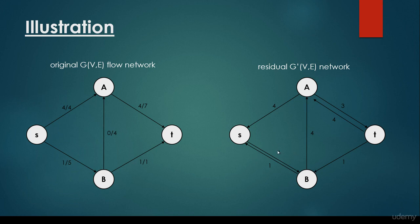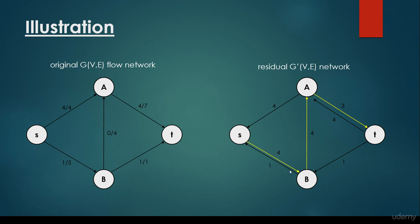The S→B edge will have value 3 in the forward edge because we can push another 3 units to reach capacity. We can send back 4 units on the backward edge since we have already sent 4 units from A to T. For the next shortest augmenting path, it's going to be 4 plus 4 plus 3. We calculate the minimum of 4, 4, and 3, which is 3. So we add flow 3 in the original flow network G — 3 flow units are added on each edge of this path.